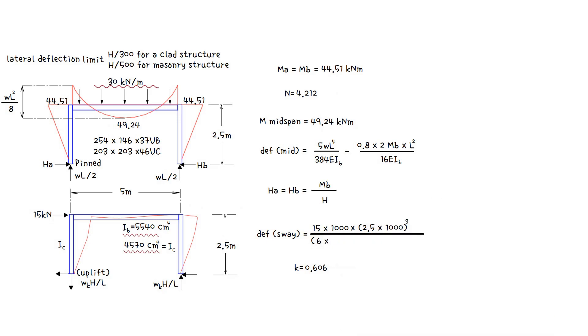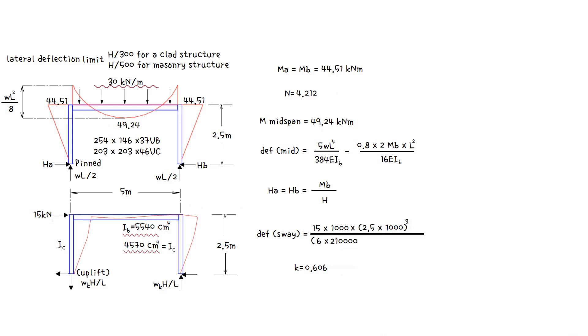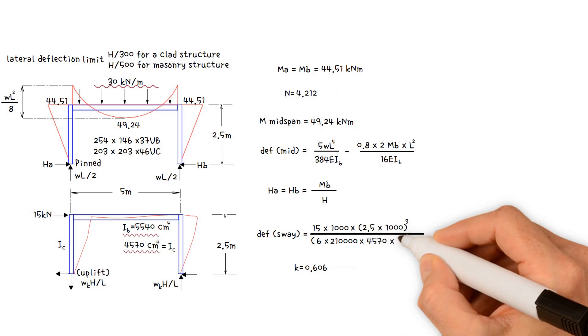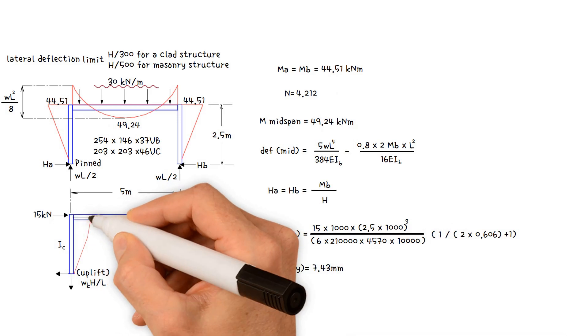Divided by open bracket 6 times E, which is the Young's modulus of steel 210,000 newton per millimeter squared times column moment of inertia 4570 times 10,000 to convert it to millimetres to 4 close bracket, times 1 divided by 2 by 0.606 plus 1. This gives us a value of 7.43 millimetres.